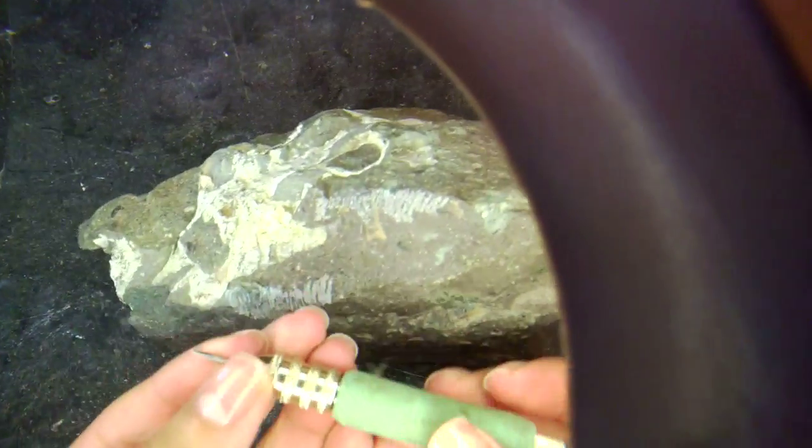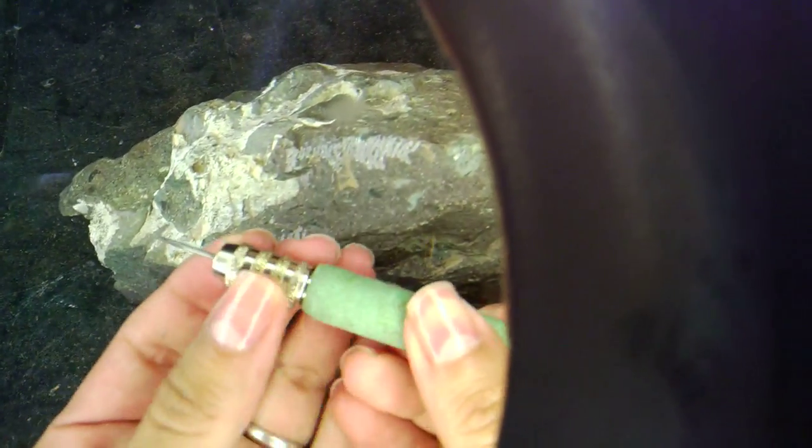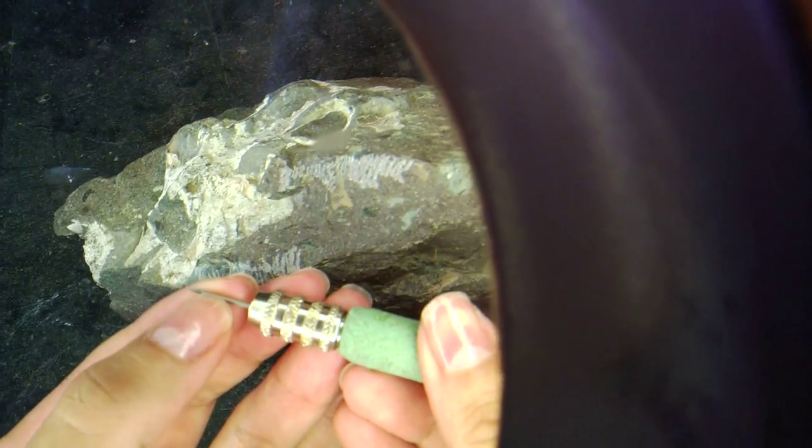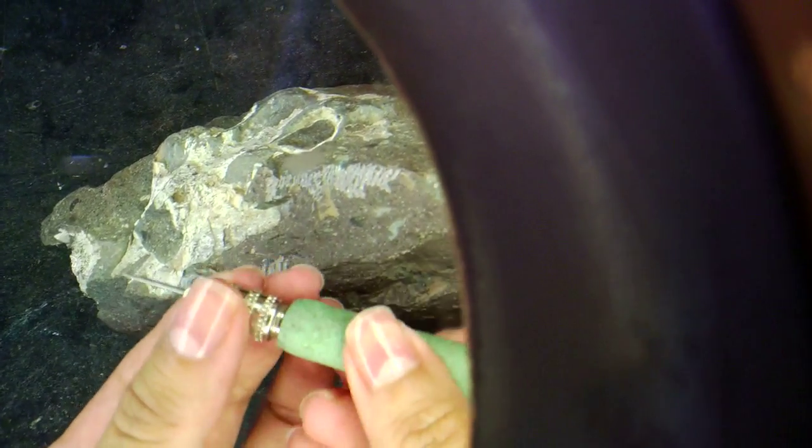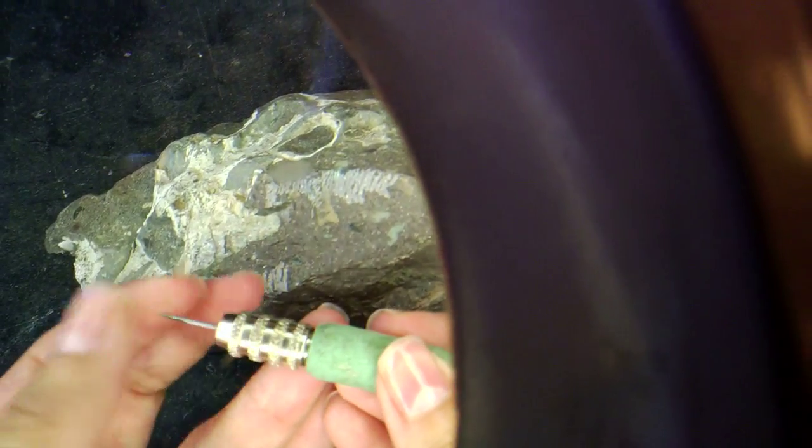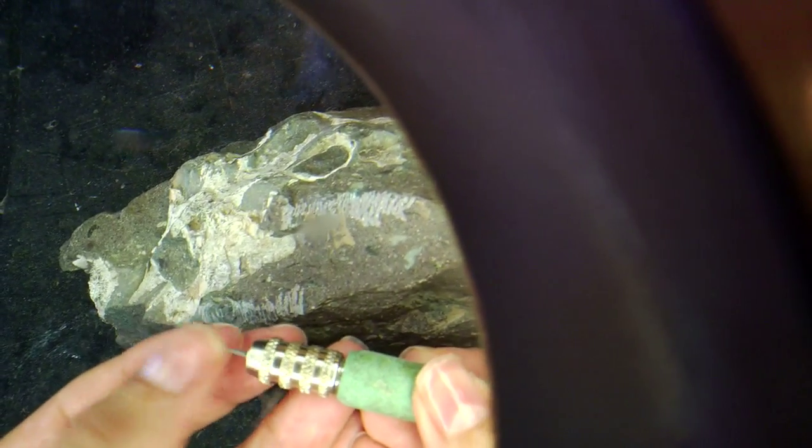And then as I get closer to the specimen, I would be moving to what we call needles on pin vices. You can see this is a very, very small needle with a flat pointy end on this pin vice here. And a needle like this I would sharpen a couple of times a day just to make sure I had the sharpest edge. And a needle I can use right against the bone here.